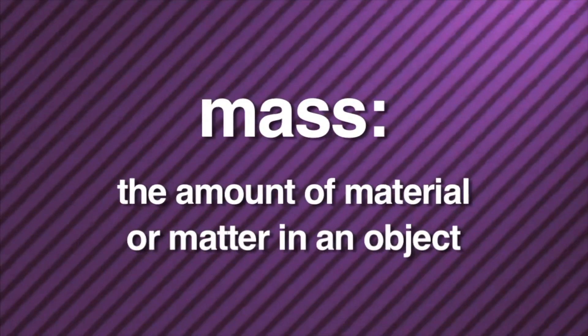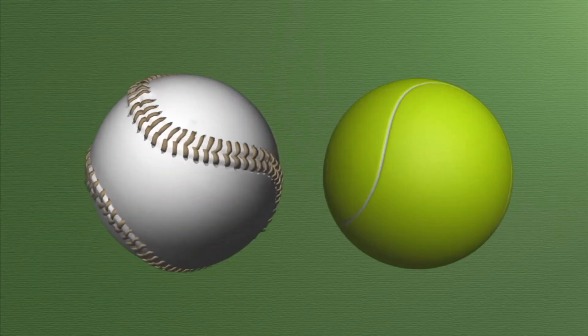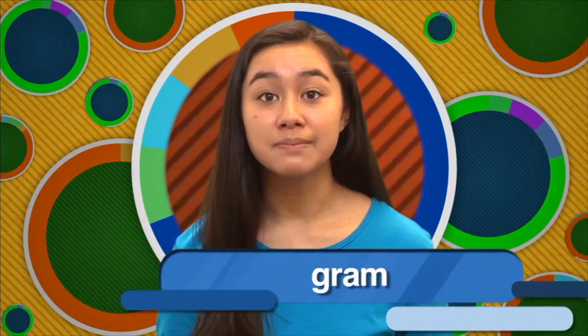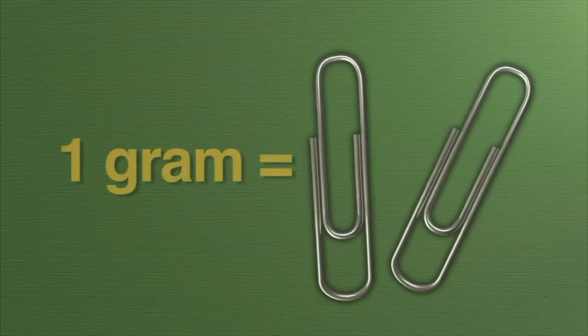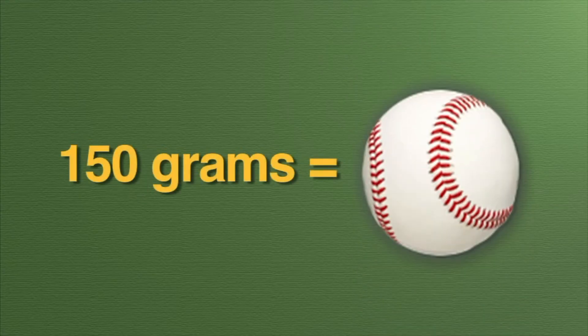Another characteristic similar to all matter is that all matter has mass. What is mass? Mass is the amount of material or matter in an object. An elephant, for example, has more mass than a bee. And even though this baseball and this tennis ball are the same size, the baseball has more mass. The mass of any object can be measured. A unit used to measure mass is called a gram. Two paperclips have a mass of about one gram. A nickel has a mass of about five grams. A baseball has a mass of about 150 grams.